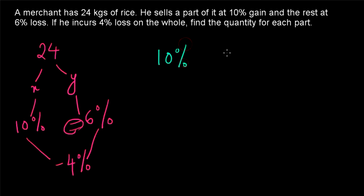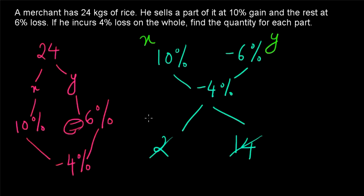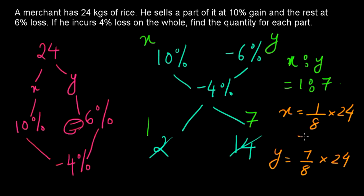10% and −6% combined together gives −4%. So X to Y is given as: the difference between −6 and −4 is 2, and the difference between 10 and −4 is 14. Therefore X to Y is 1 to 7. To find X and Y: X = 1/8 × 24 = 3 kg, and Y = 7/8 × 24 = 21 kg. That is the final answer.